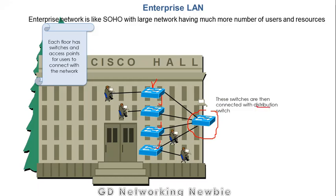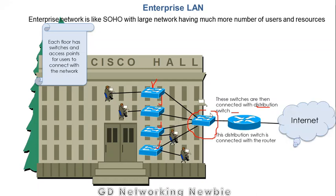This distribution switch is further connected with the router, and then this router is connected with the internet. This is how an enterprise local area network looks like. This was the difference between the SOHO and the enterprise local area network.